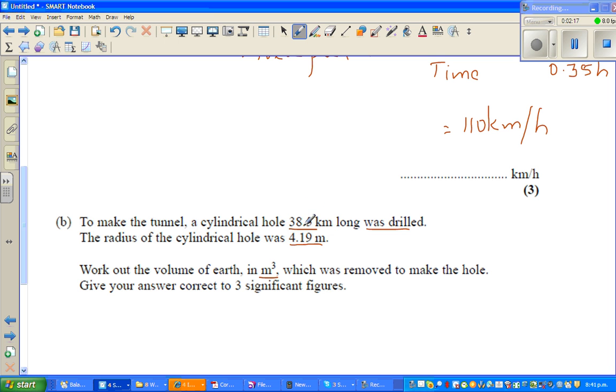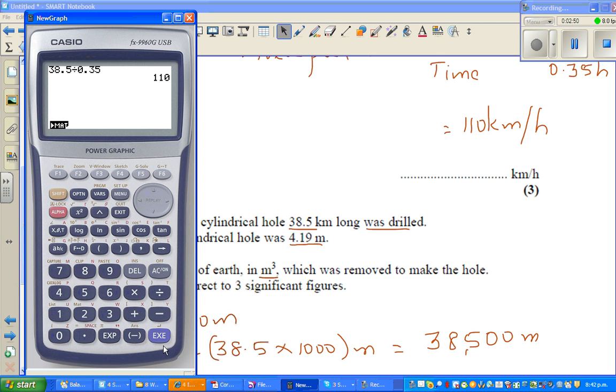Here you need to change kilometers to meters. You should know the relation: one kilometer is 1000 meters. So 38.5 km would be 38.5 times 1000 meters, which is 38,500 meters.